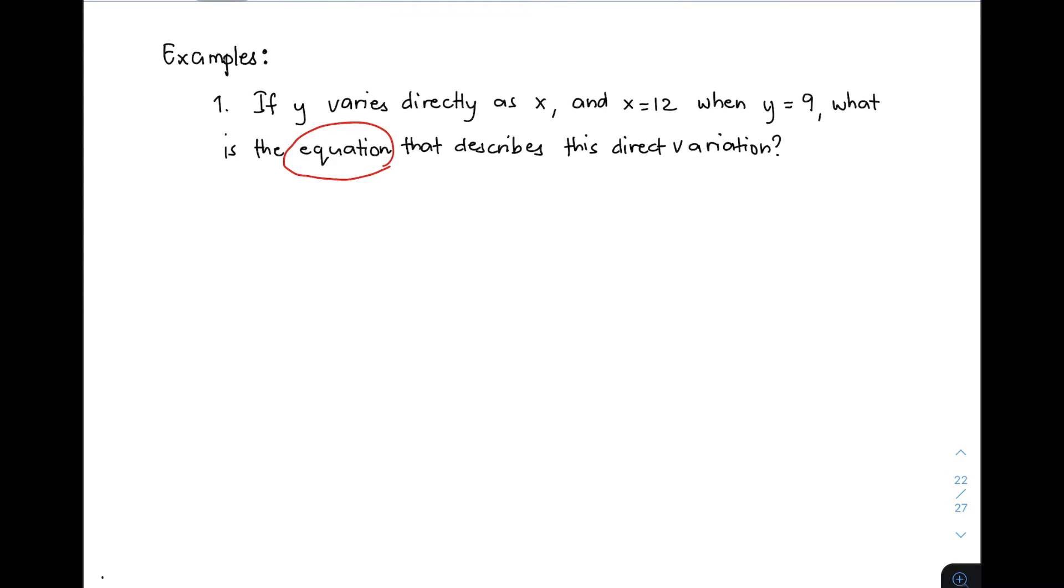First, translate Y varies directly as X, meaning that is equivalent to Y is equal to KX. That's not the final answer. First, you need to find the value of K. Given X is equal to 12 and Y is equal to 9, simply substitute these values to Y is equal to KX.